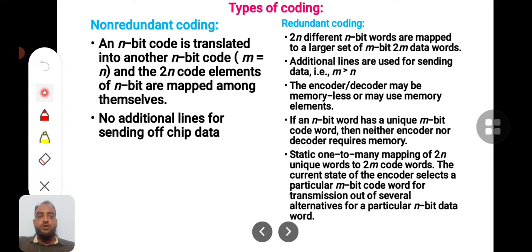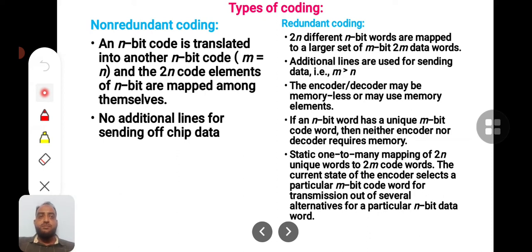The encoder or decoder may be memoryless or may use memory elements — it is not required that they must have a memory element. For non-redundant coding, no additional lines are required, whereas for redundant coding, some additional lines may be required to transmit the data.